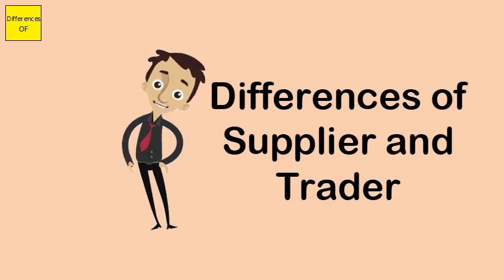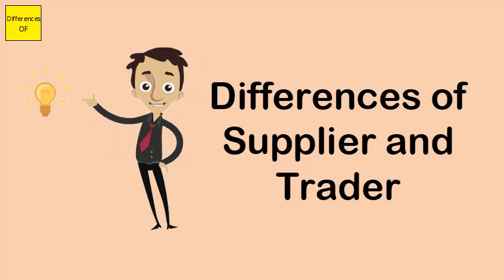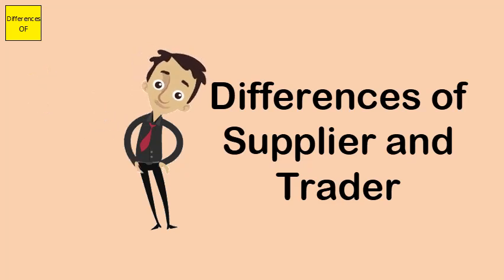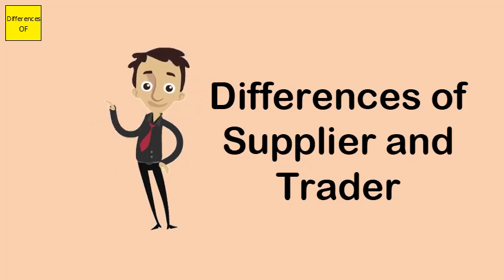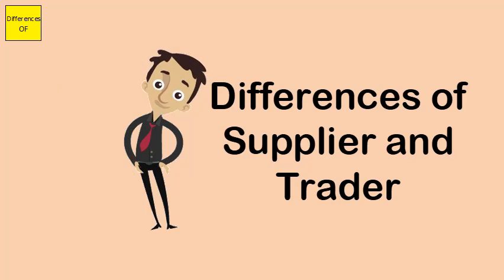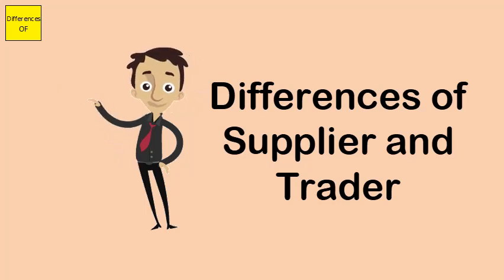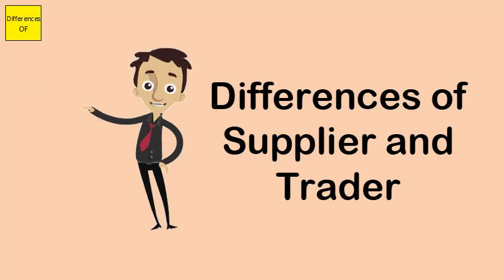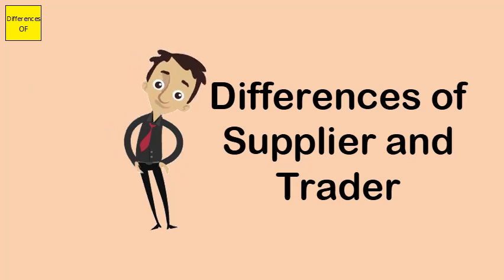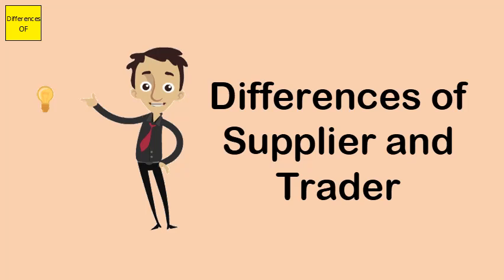In the case of a supplier, there is no exchange involved. In the case of a trader, there is an exchange of one thing for another. The suppliers supply their share of goods to the customer. The traders purchase and keep the goods until the market reaches its value. The profit factor is not engaged with the suppliers, whereas traders are engaged in buying and selling for profit.